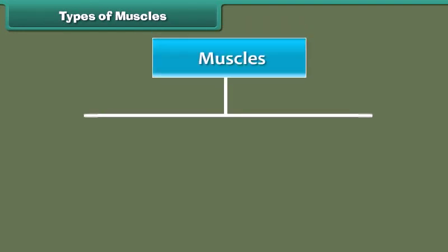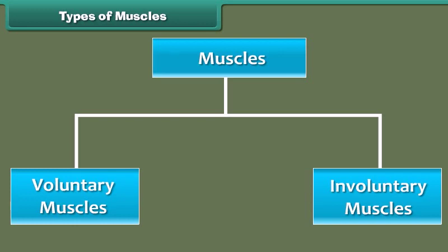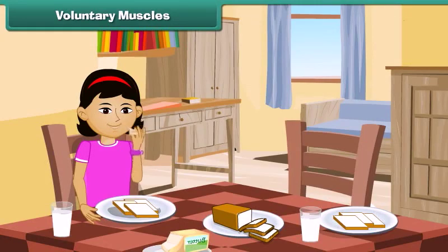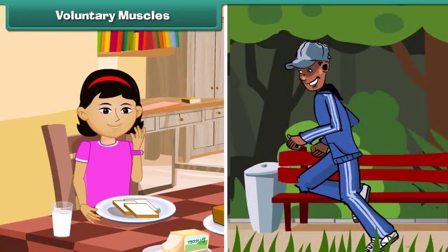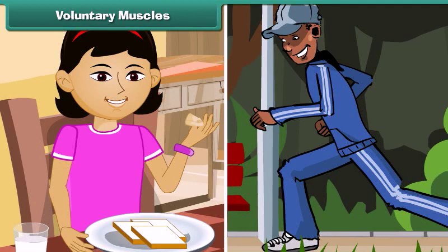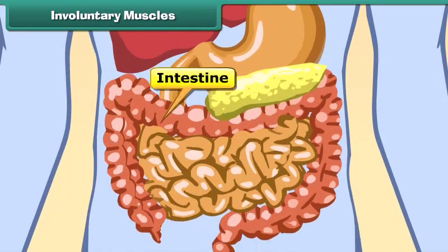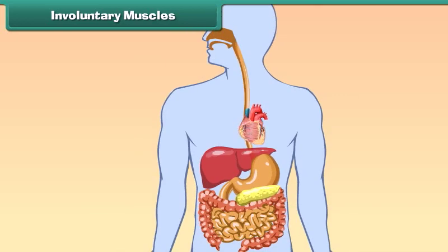According to the nature of their functions, muscles are of two types: voluntary muscles and involuntary muscles. Some actions are performed whenever we wish, like eating, walking, etc. We can start or stop these actions whenever we want. Muscles that carry out these actions and act according to our wishes or volition are called voluntary muscles. Movements brought about by voluntary muscles are called voluntary movements. Our arms and legs contain voluntary muscles. The functions of the stomach, intestines, and heart go on in a fixed manner. The functioning of these organs is not dependent on our wishes. Such muscles are called involuntary muscles, and their movements are called involuntary movements.